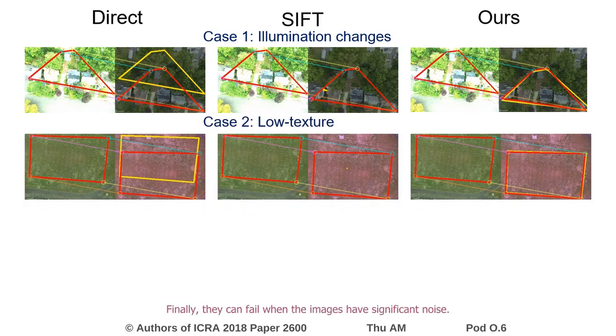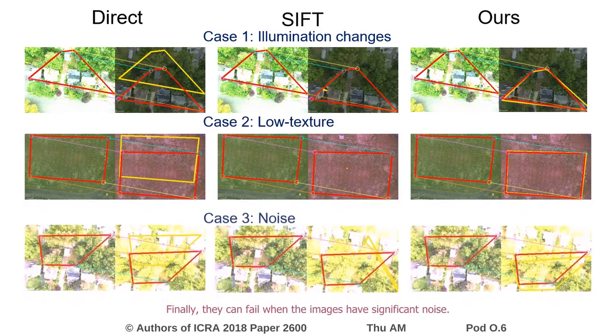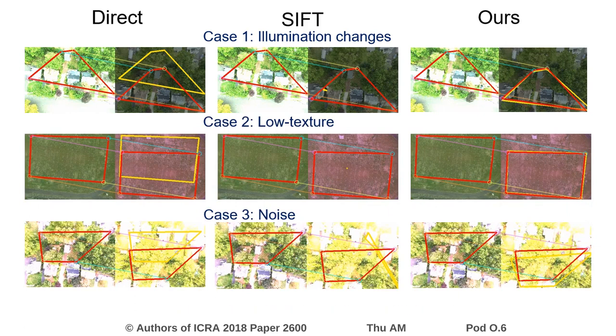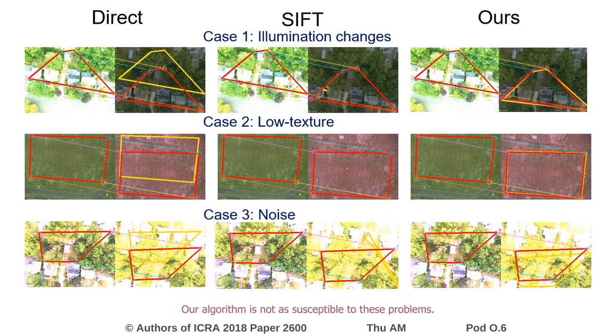Finally, they can fail when the images have significant noise. In these examples, red represents the ground truth correspondences and yellow the estimated correspondences. Our algorithm is not as susceptible to these problems.